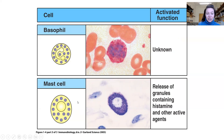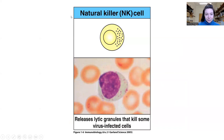Mast cells are one of the most important cells in allergy and parasite removal. In fact, if you remove mast cells and suppress them with antihistamine, you can dampen most immune responses. They release granules containing histamine — each of these purple circles is a vesicle or sphere containing histamine.